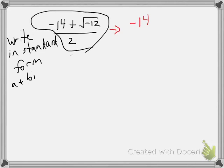So my first step is to write negative 14 plus i, the square root of 12, all over 2. That's all I've done, is instead of writing the square root of negative 12, I've written the square root of 12 with an i in front.